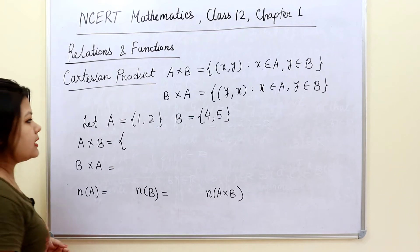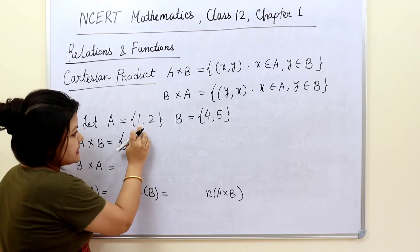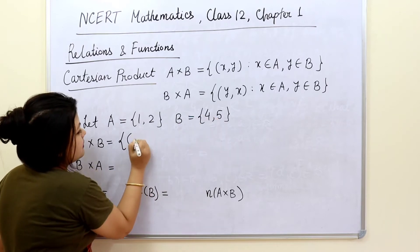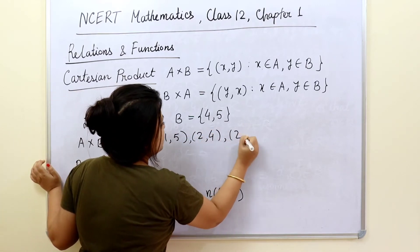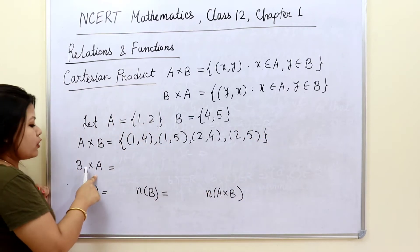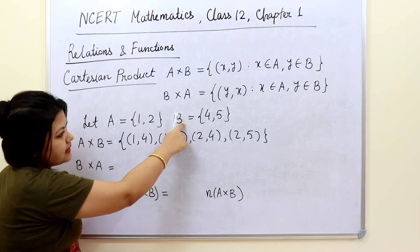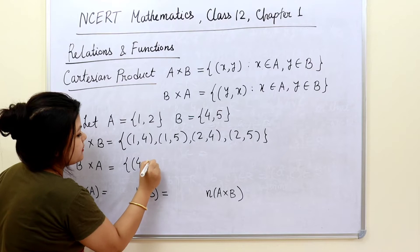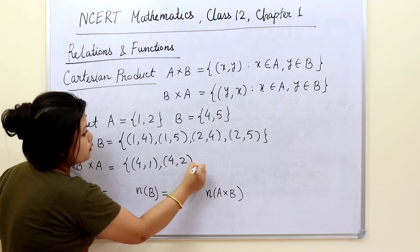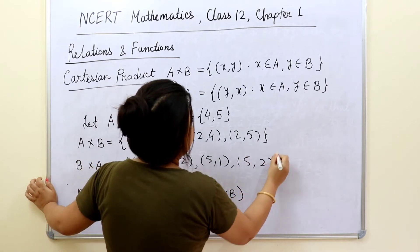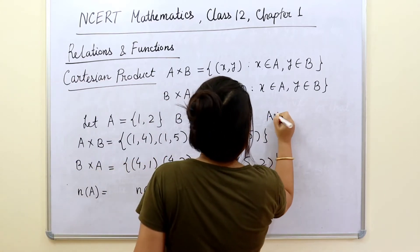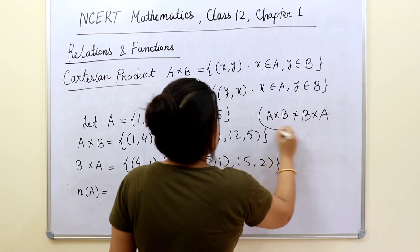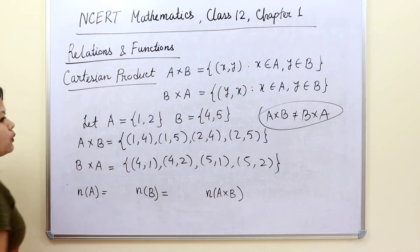According to the formula, A cross B gives us the ordered pairs: (1,4), (1,5), (2,4), (2,5). Now let us write down B cross A. In B cross A, the elements of B come first, so it becomes: (4,1), (4,2), (5,1), (5,2). If you compare A cross B and B cross A, you can see that these values are not equal — A cross B is not equal to B cross A.